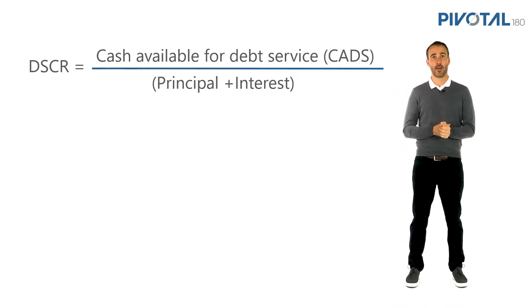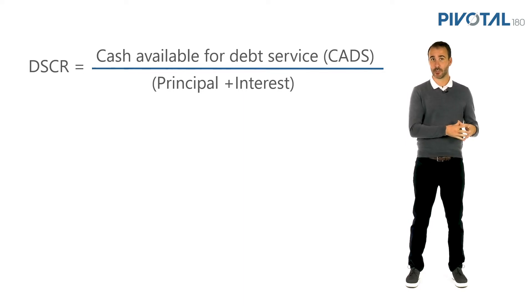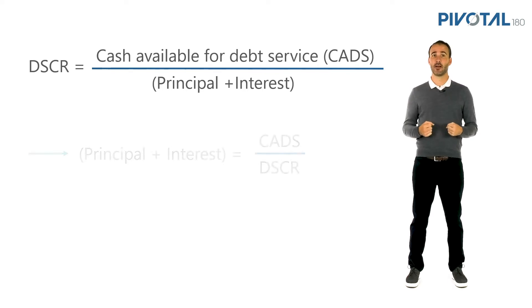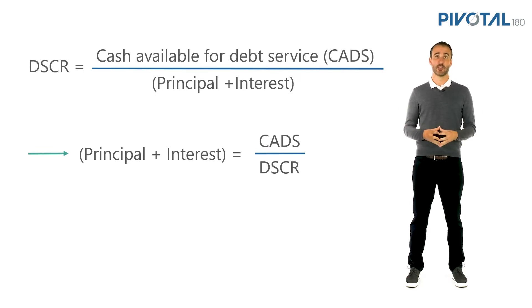So how does debt sculpting actually work? Remember, DSCR is simply CADs divided by debt service. We can rearrange this formula: debt service, which equals principal plus interest, equals CADs divided by DSCR. So our principal is simply CADs divided by DSCR, less our interest itself.